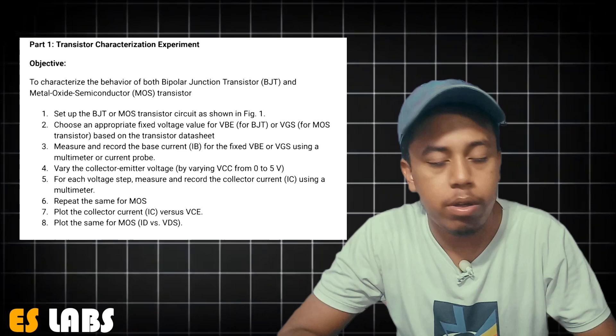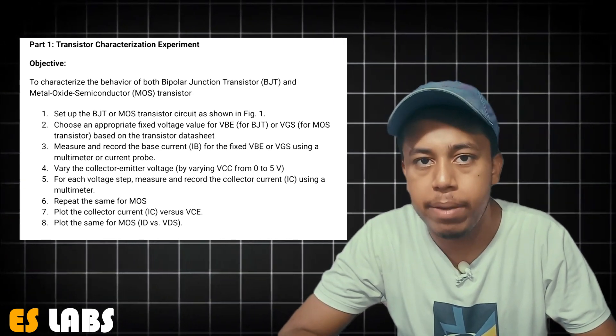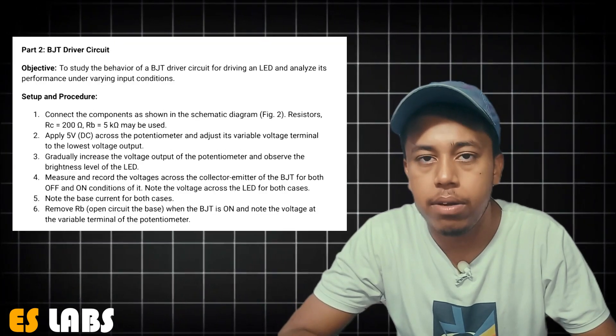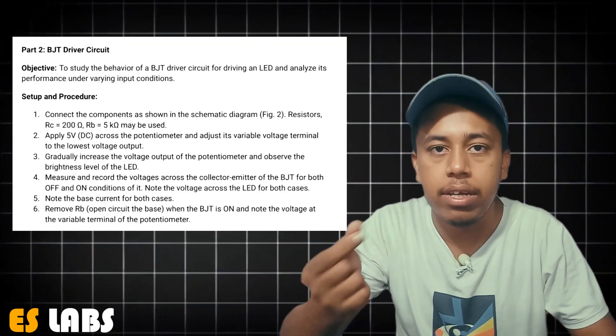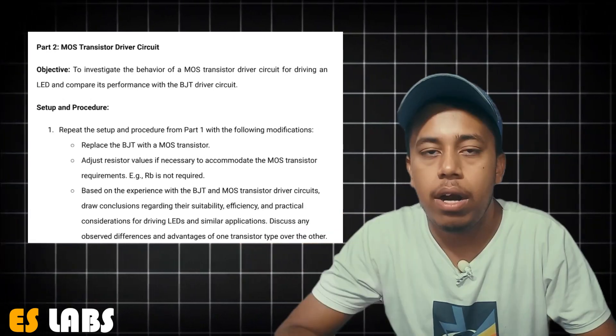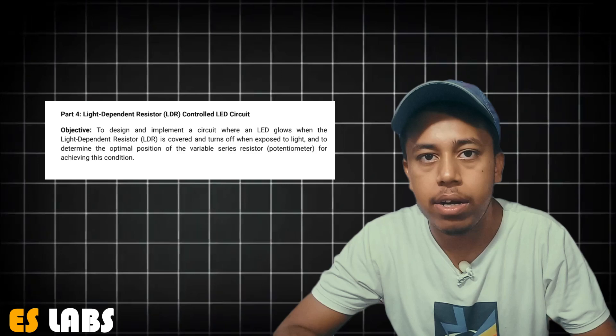So this experiment is divided into four parts. In part first, we are going to analyze the behavior of BJT and MOSFET. And in the second part, we are using the LED to determine the behavior of both BJT and MOSFET. And in the fourth part, we are going to use light dependent resistor.